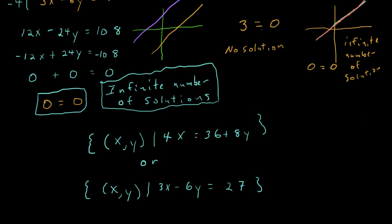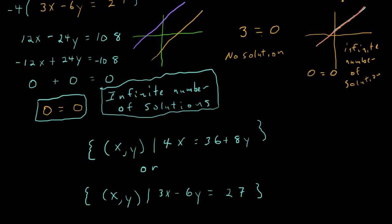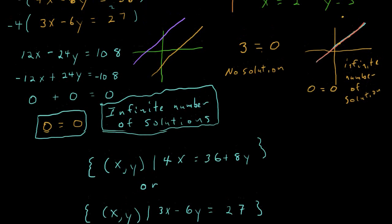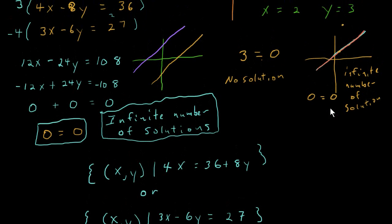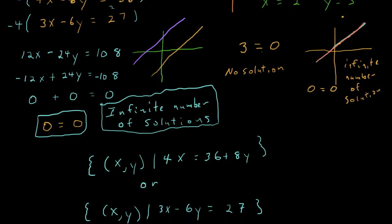Okay, so the key here is if you end up with something like 0 equals 0, then you have the case where there was an infinite number of solutions. It's the case where the lines are dependent is what they actually are. One is right on top of the other one. Hope that helps. See ya.